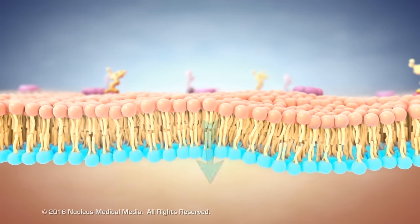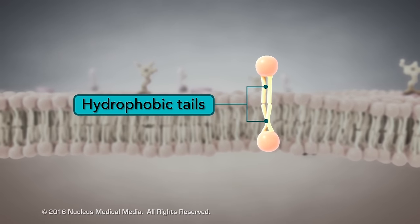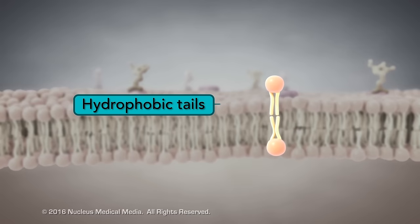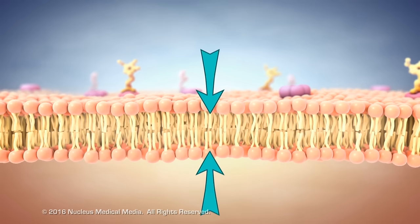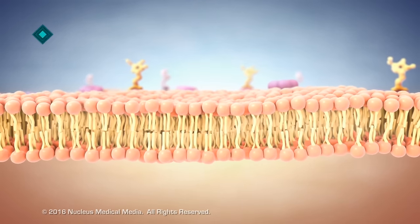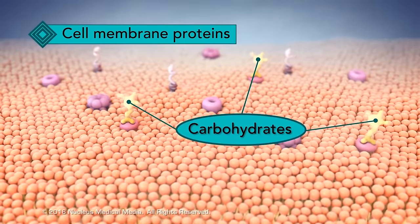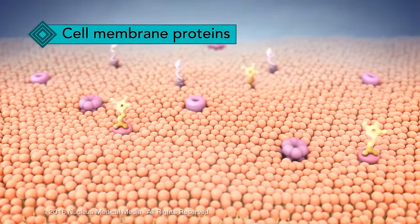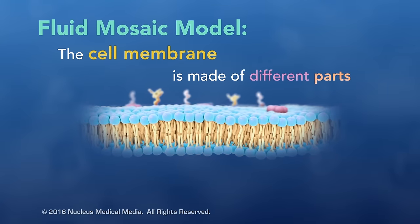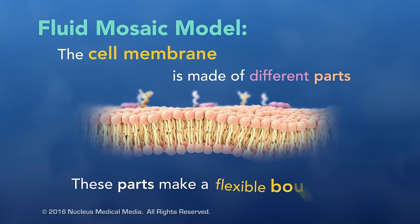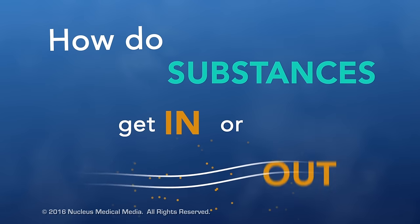The round head portions of phospholipids are hydrophilic, attracted to water. Both the extracellular fluid and the cytoplasm inside the cell are mostly water. So the hydrophilic heads of the outer layer orient toward the extracellular fluid, and the heads of the inner layer orient toward the cytoplasm. The phospholipid tails are hydrophobic — watery areas repel them — so they orient toward each other, away from the watery content. Scattered proteins are embedded in the phospholipid layers, some with carbohydrates attached.